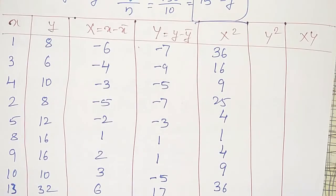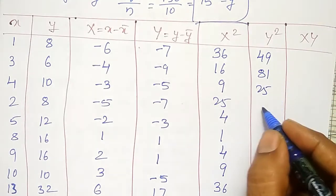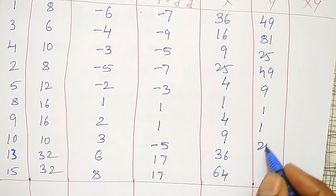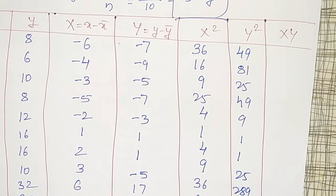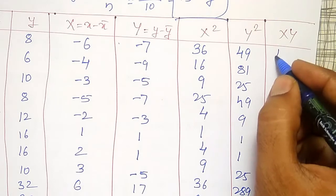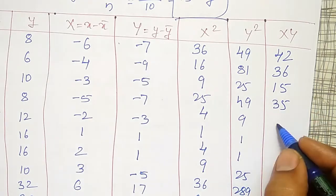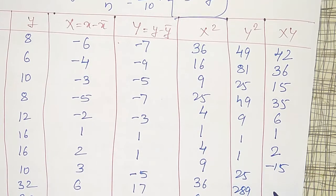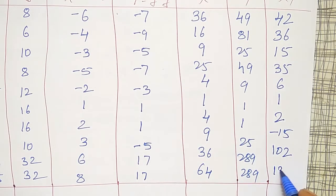Like that, the Y² values are: 49, 81, 25, 49, 9, 1, 1, 25, and 17²=289. Then capital X times capital Y: minus times minus becomes plus 42, next plus 36, next 15, next 15, next 35, plus 6, plus 1, next 2, minus 15, then 6 times 17 equals 102, and 8 times 17 equals 136.